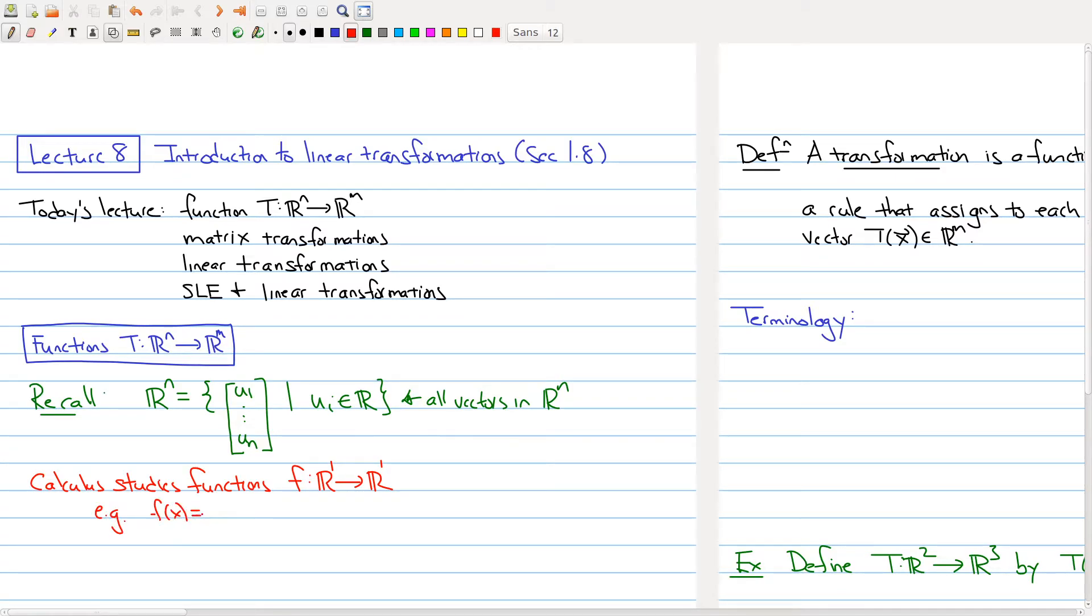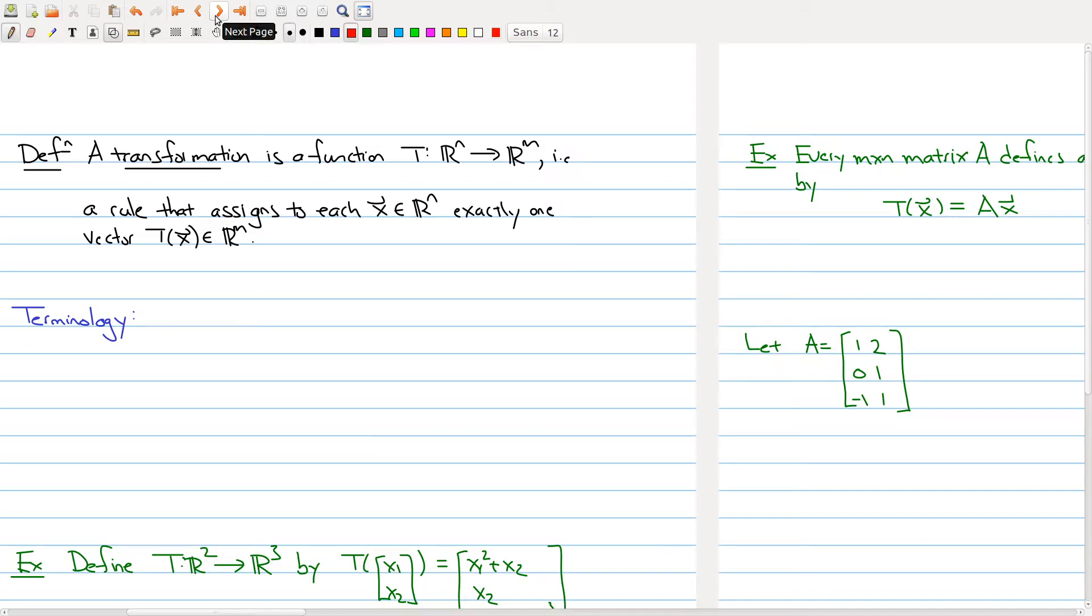As an example in calculus, these are functions that you may be looking at: F of x equals x squared, F of x equals 3 cos x, and so on. We look at the derivative of these, integration, and so on. Now, what we're interested in is not so much functions where the n and the m are both one, but where we allow n and m to be any positive integer.